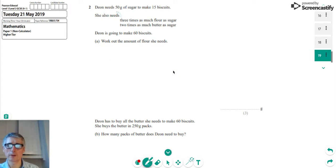We're told that 50 grams of sugar are needed to make 15 biscuits, and also they take three times as much flour as sugar and two times as much butter as sugar. This person Dion is going to make 60 biscuits. To work out how much flour she needs, the first thing we can say is if she needs 50 grams to make 15 biscuits...